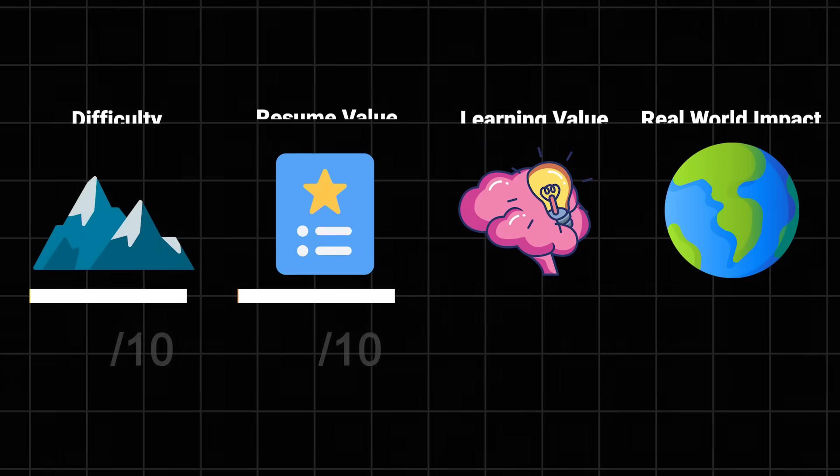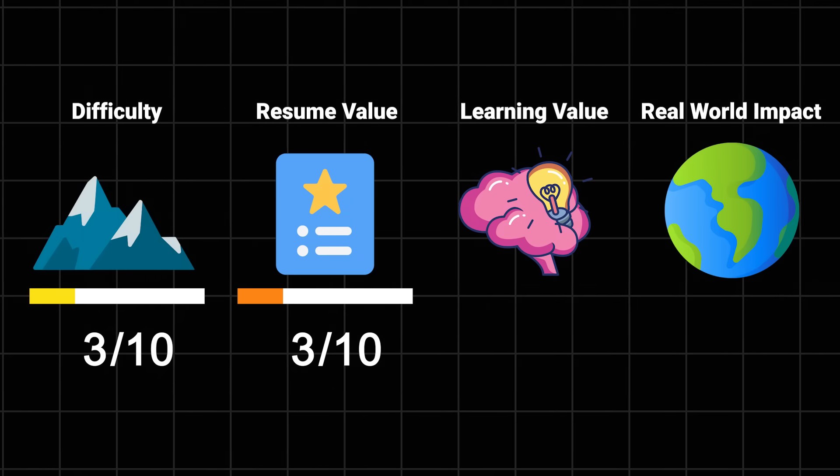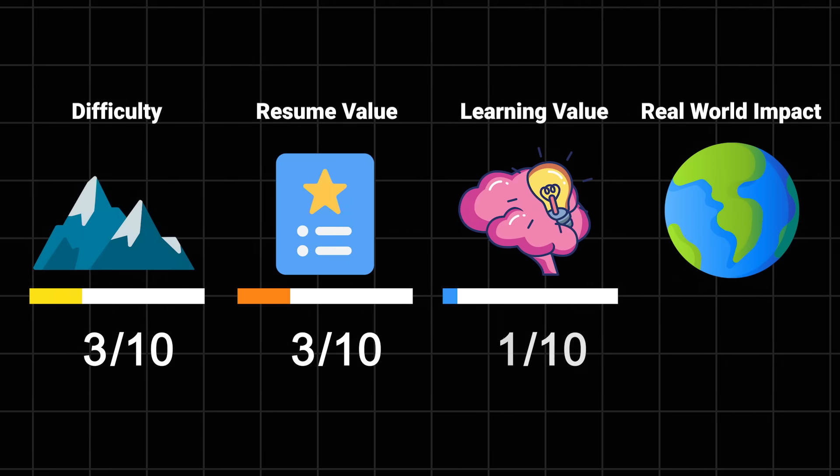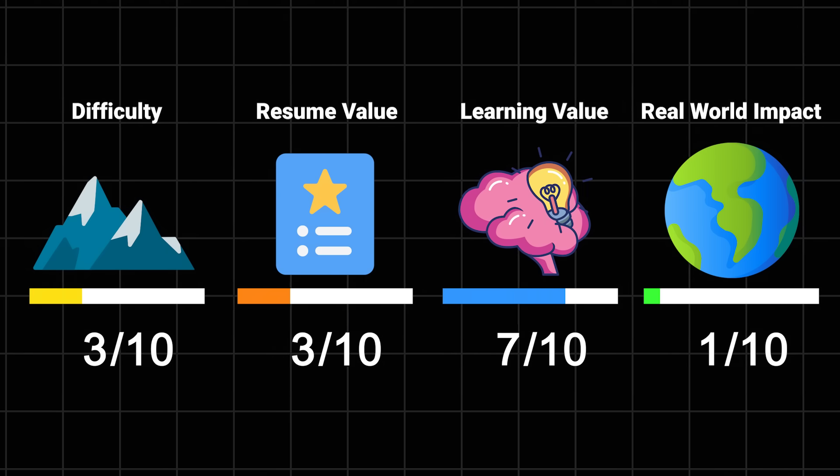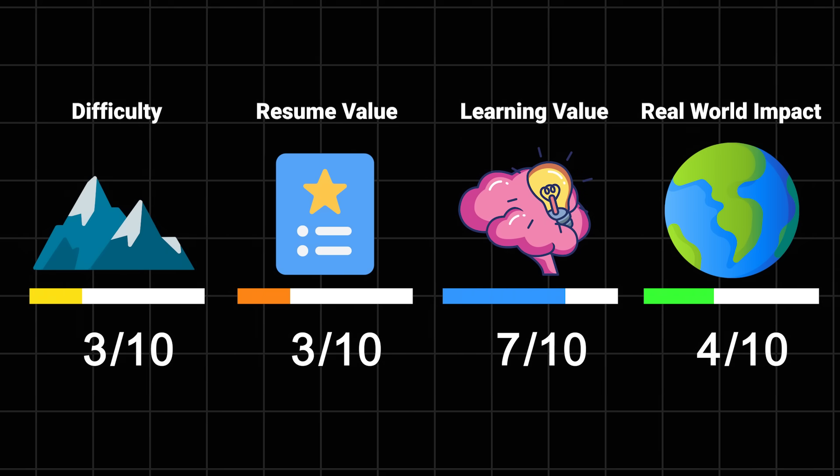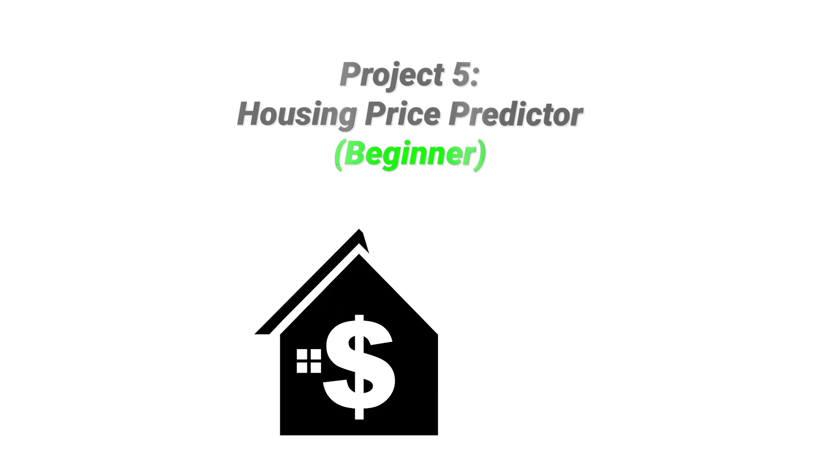Difficulty: 3 out of 10. Resume value: 3 out of 10 because everyone's done it. Learning value: 7 out of 10. And impact: 4 out of 10 because these skills apply to any real-world classification problem.